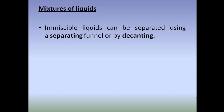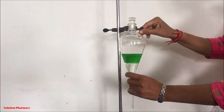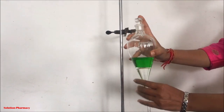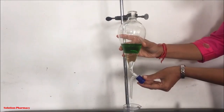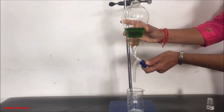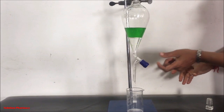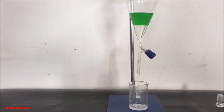Next: separation of liquids. Immiscible liquids can be separated using a separating funnel or by decanting. The immiscible liquids are added to the separating funnel, mixed well, and allowed to settle. Then the tap is opened and the lower layer is separated into a beaker, while the upper layer is collected in another beaker. This is how immiscible liquids are separated using a separating funnel.